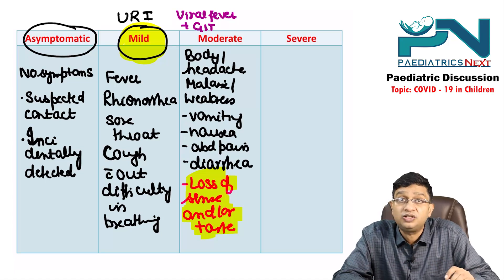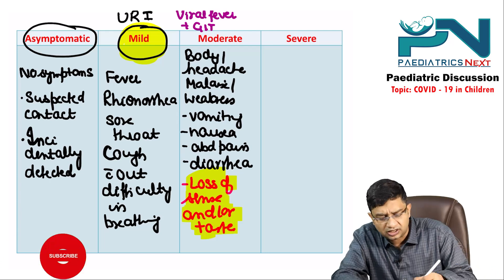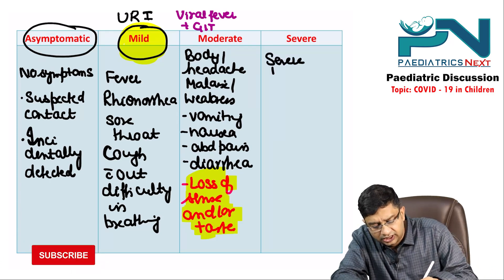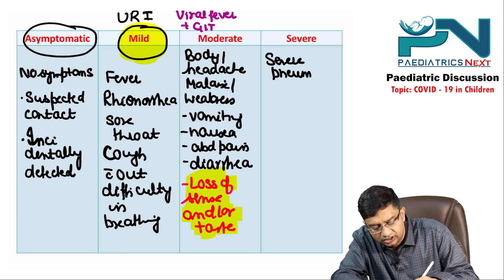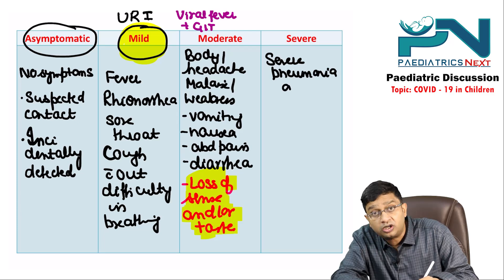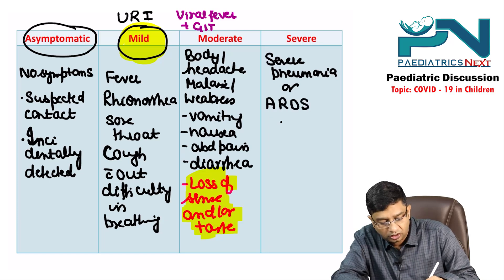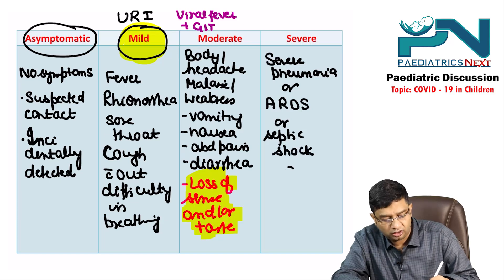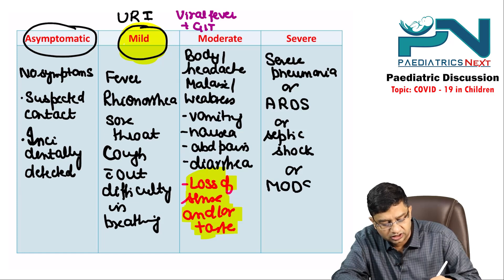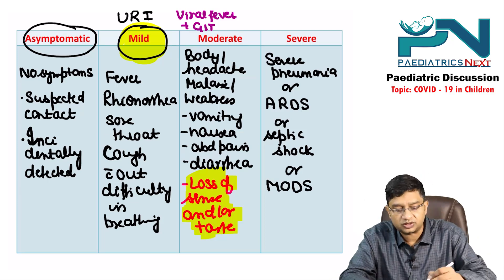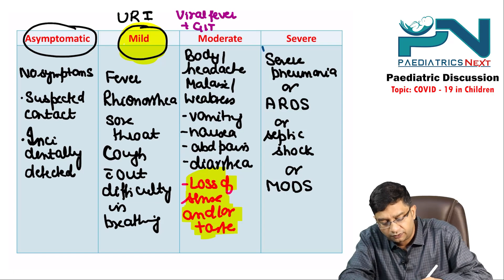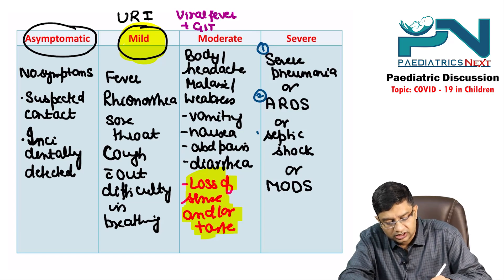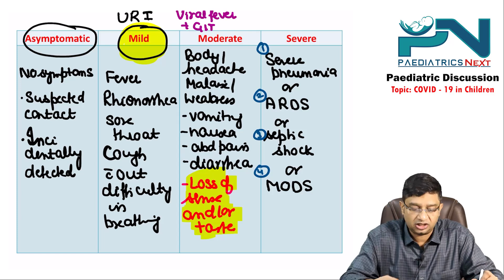In the severe cases, as the name indicates, everything will be severe. The child can have severe pneumonia, acute respiratory distress syndrome, features of septic shock, or multi-organ dysfunction syndrome. These four conditions characterize severe COVID-19 in children.